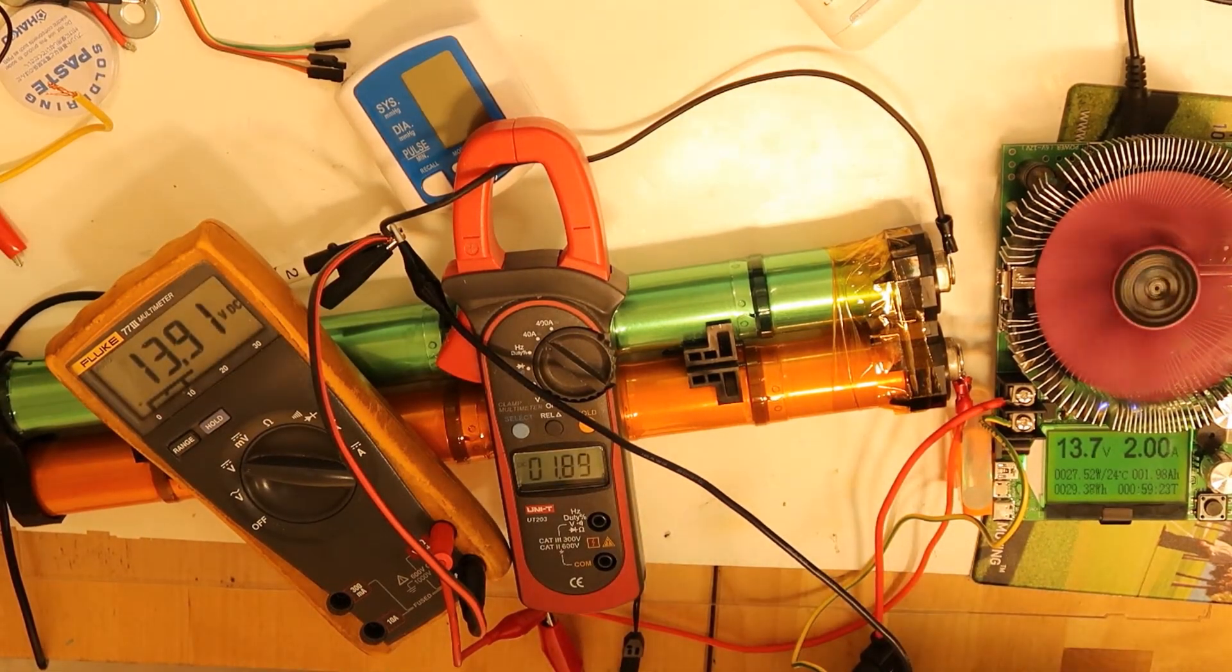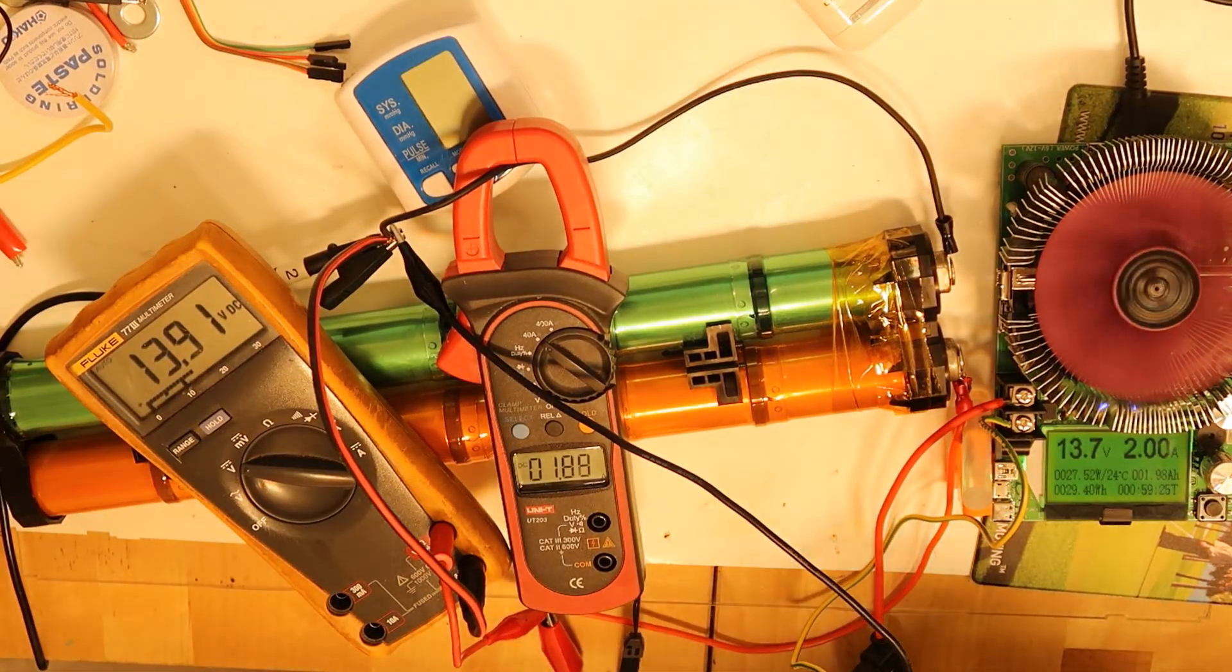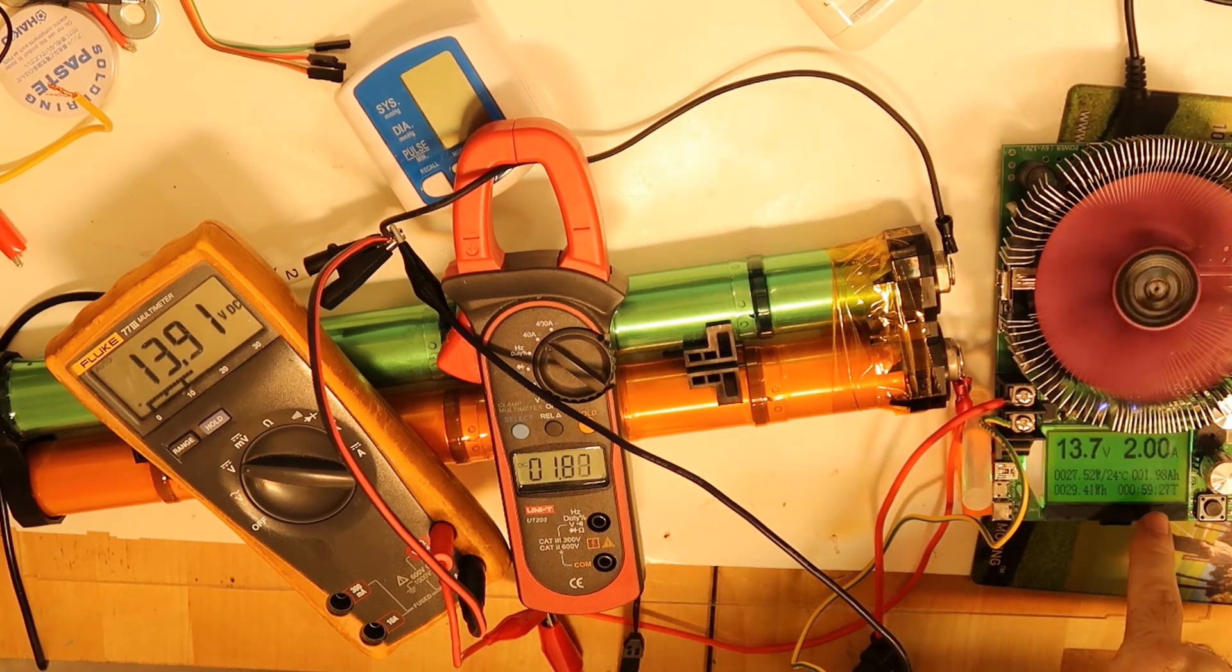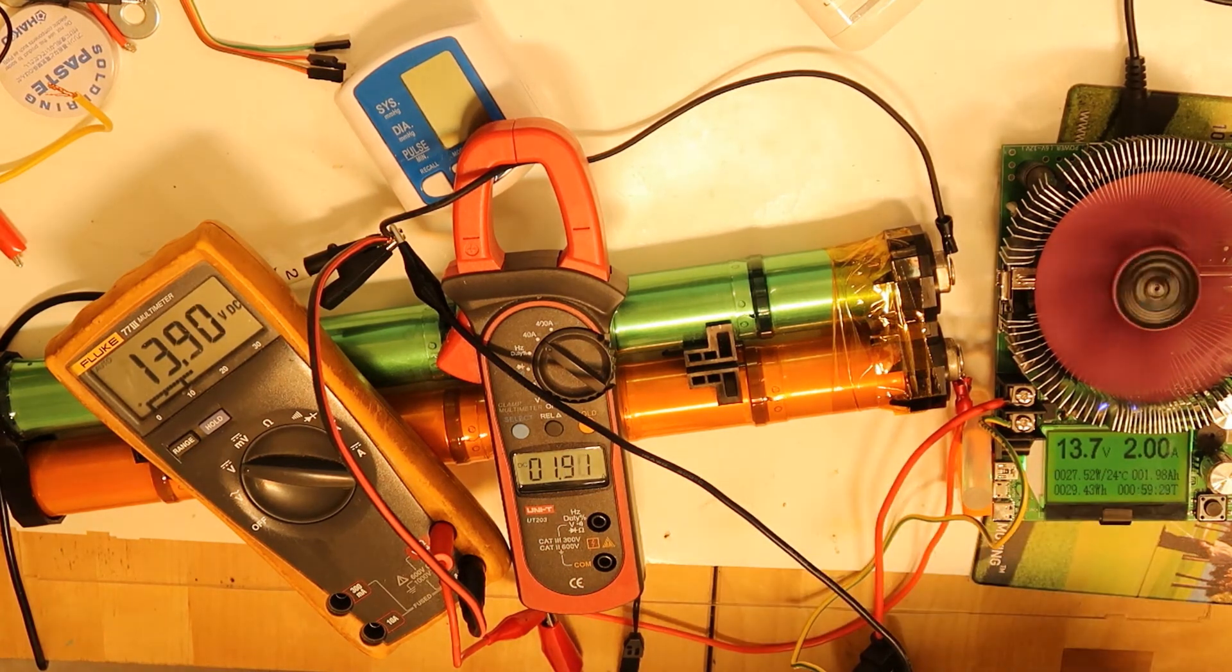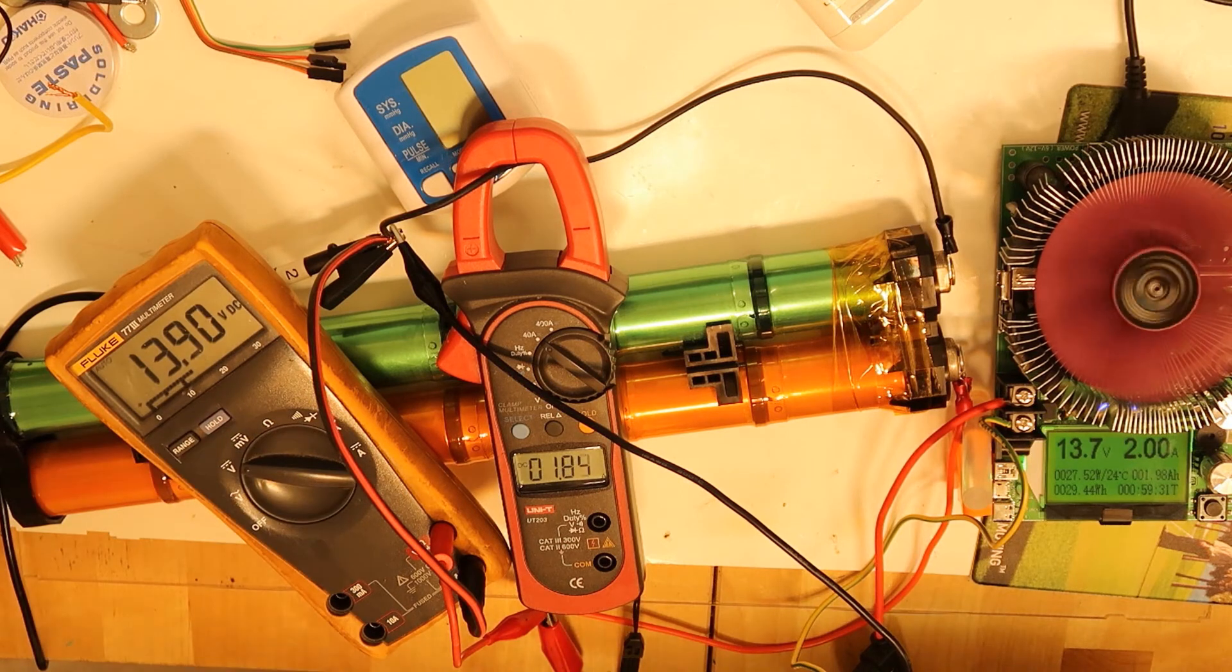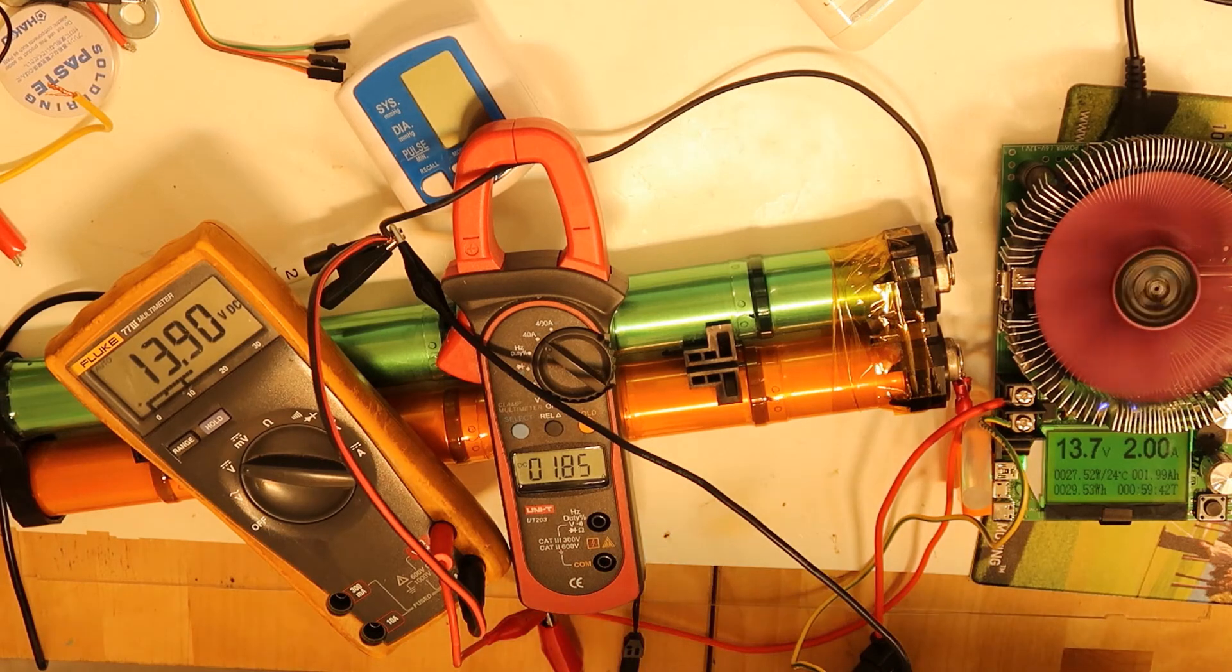Discharge continues. We can see right now already close to 2 amp hours and the voltage is 13.9 volts. Again it can be down to 10.8 volts so we have a lot of capacity to discharge and this is continuing.